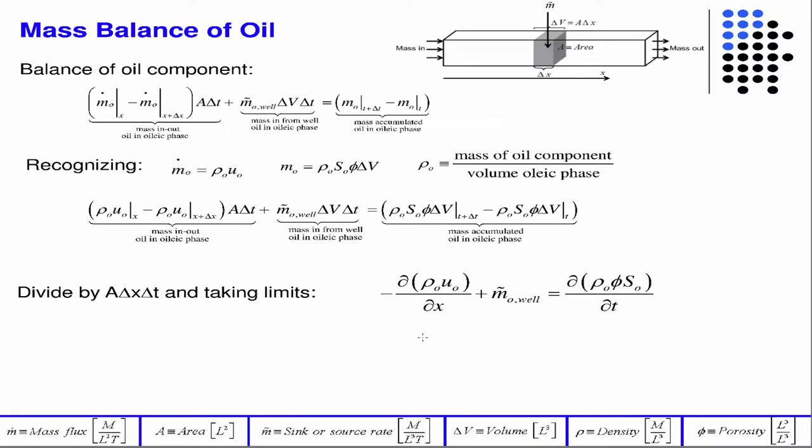We're going to balance now on the oil, so we have the mass of oil in the oleic phase. If we were very general, we would also have the mass of volatilized oil in the gaseous phase, but we're neglecting that in the black oil model. The mass in or out from a well must equal the total mass accumulated. What follows is exactly like everything we said for water, except the W's are O's — nothing new on this slide. We get the exact same continuity equation with O's now.